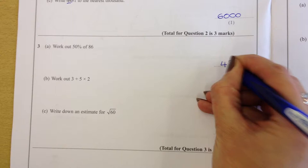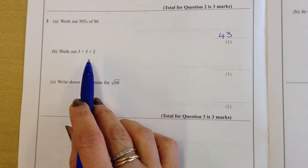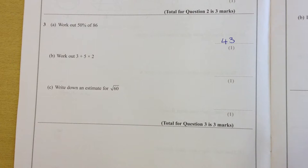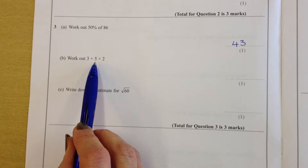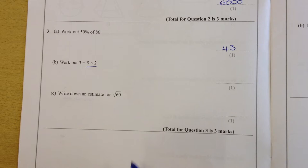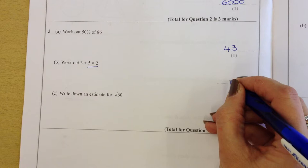Work out 3 plus 5 multiplied by 2. Now, again, it looks straightforward. You would think if you're going to fall into a trap, you would add the 3 and the 5 to start off with. Some of you might have realized it's all to do with BODMAS. So we must do this part of the calculation first. So 5 times 2 is 10 plus 3 is 13.